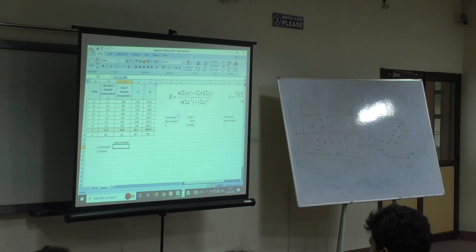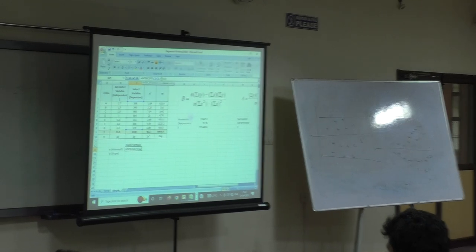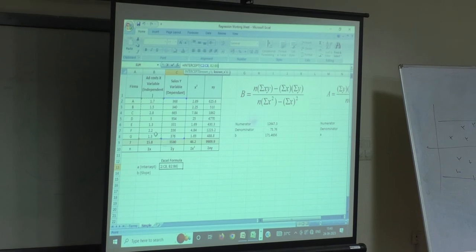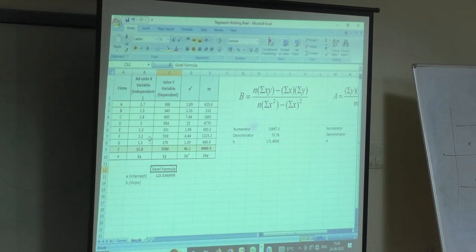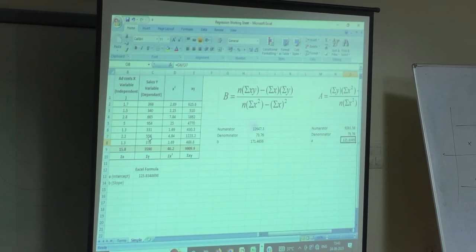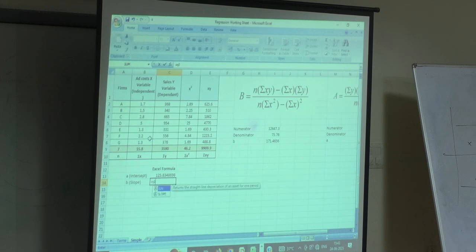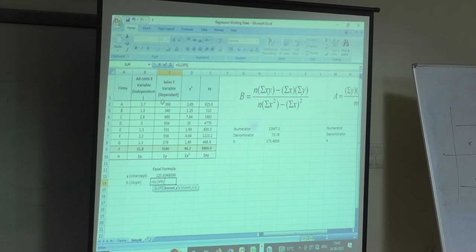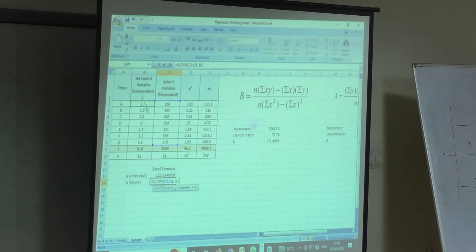First, let's look at Excel formulas. You have something called intercept only here. And then if you see here, known y's - y's is my sales variable, and known x's. Yeah, 125, that's how much I got, which is also the same here. Now, let's look at B. B is also - you have a formula called slope. Known y's, known x's.